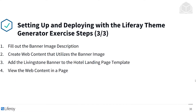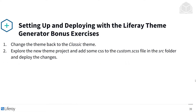Then we can get to work filling out the banner image description, creating web content that utilizes the banner image, adding the Livingston banner to the hotel landing page template, and viewing the web content in a page. After this exercise, there will be a few bonus exercises you can try yourself, including changing the theme back to the classic theme, exploring the new theme project, adding some CSS to the custom SCSS file in the source folder, and deploying the changes.